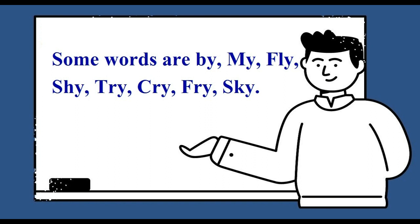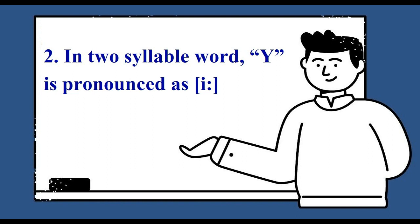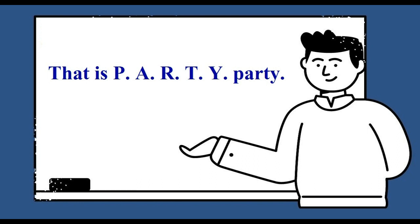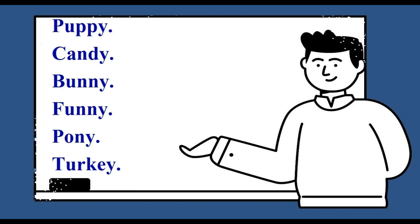In two syllable words, Y is pronounced as I. That is: party, puppy, candy, bunny, funny, pony, turkey, happy, cherry, tiny, penny, city, baby.